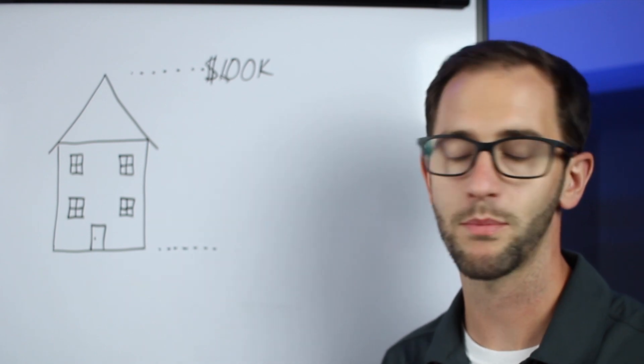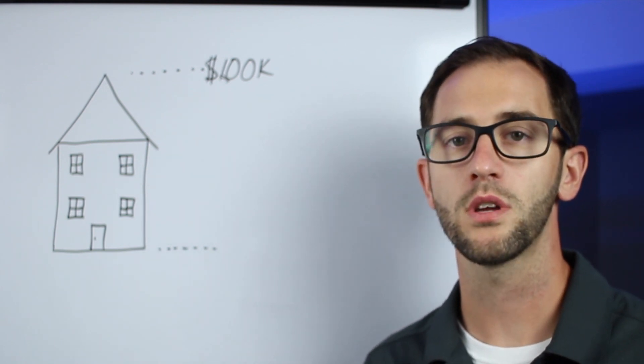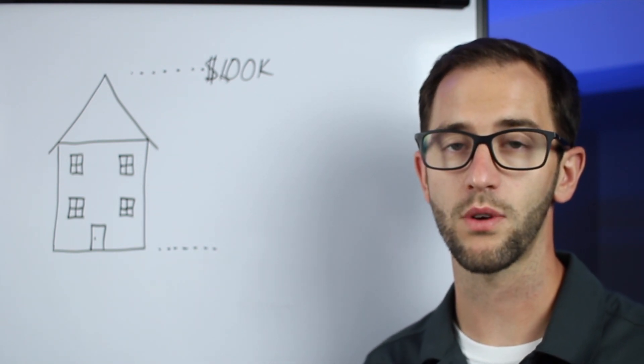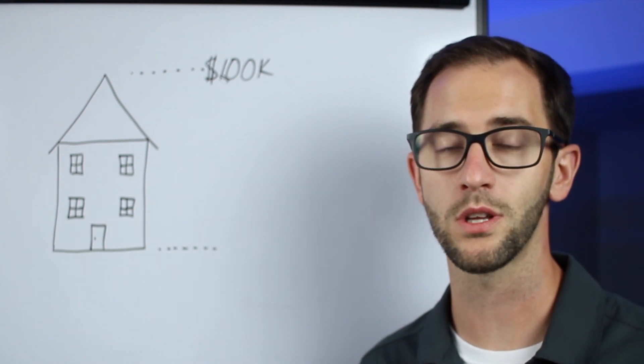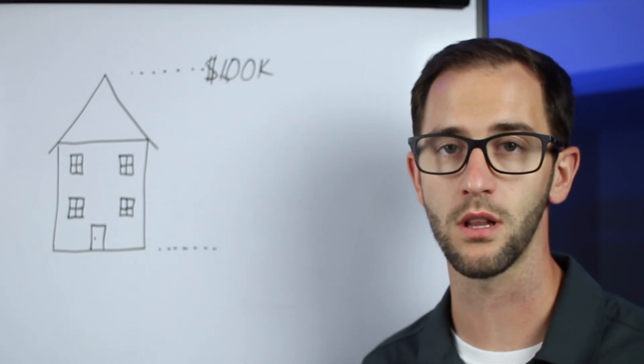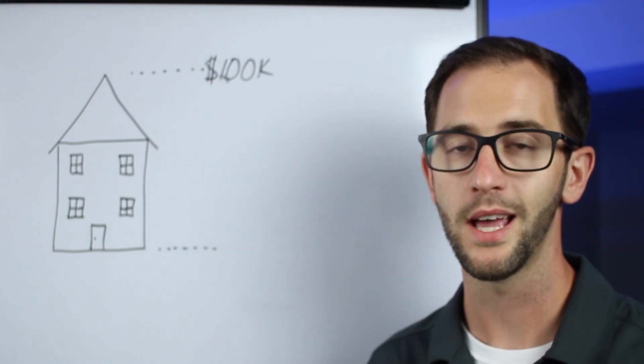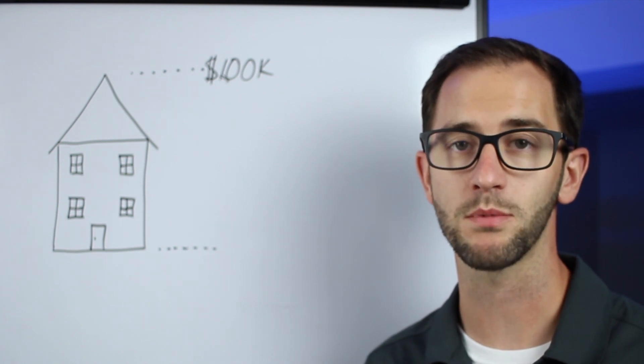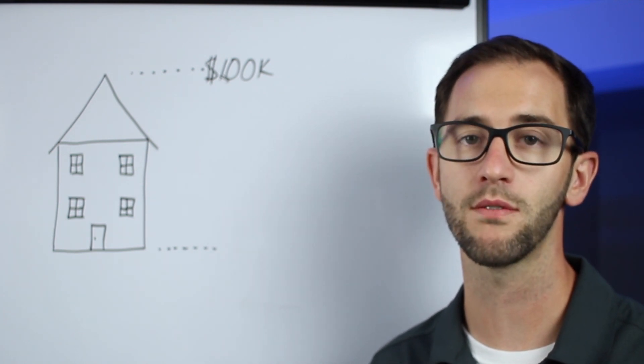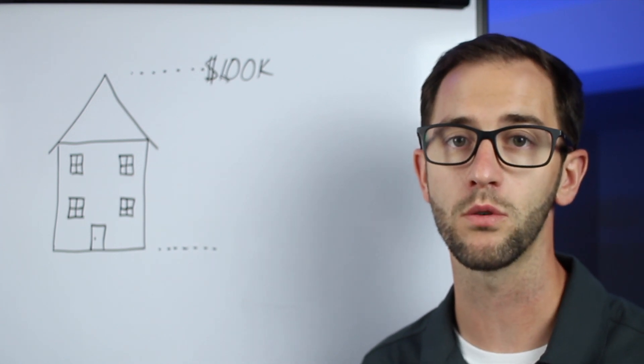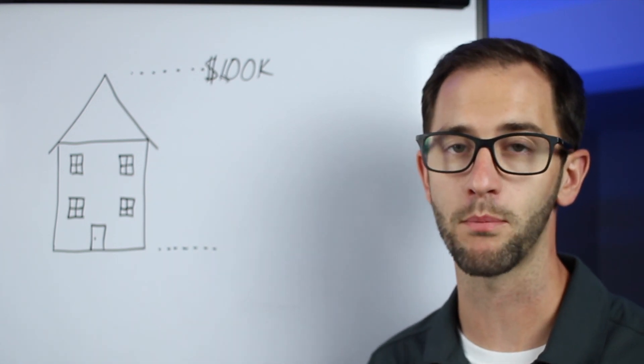So why does that become important? How you can use this is to try to figure out what your house is worth. You can chat with a realtor, you can use Zillow just to come up with a ballpark figure and multiply that value times 0.8 and that will give you the amount that a bank will likely loan against that particular property.